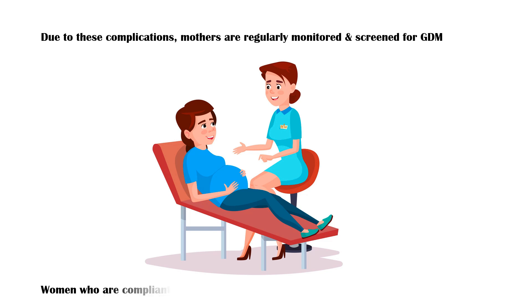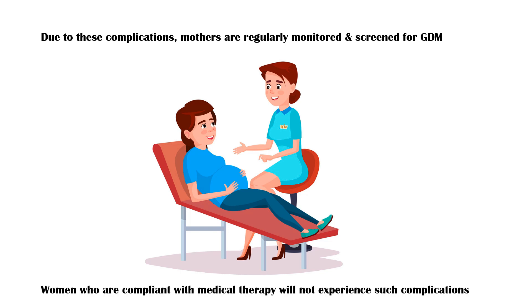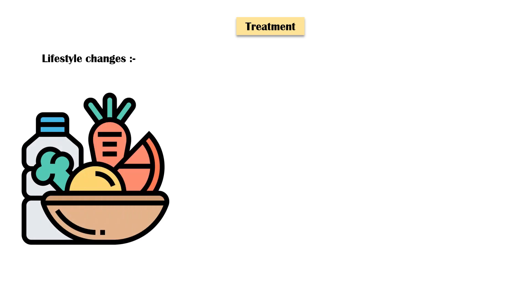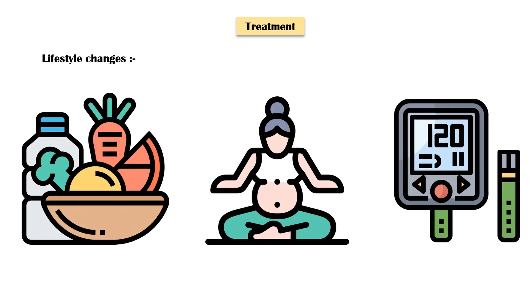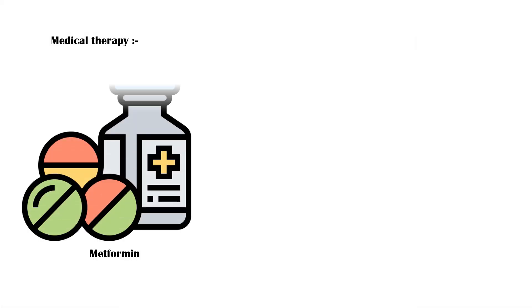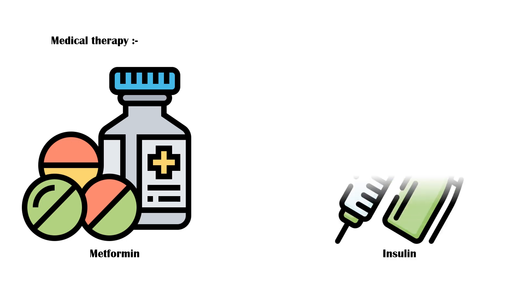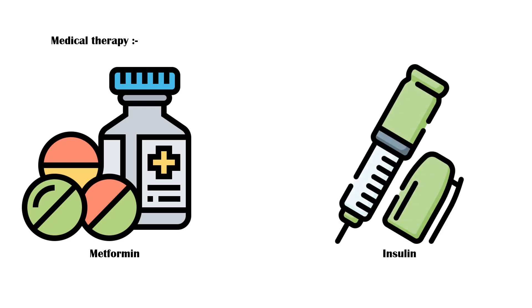Therefore, women who are compliant with medical therapy will not experience such complications. First-line treatment of gestational diabetes is lifestyle changes, including dietary modifications, exercise, and blood glucose monitoring. Medical therapy includes oral hypoglycemic agents such as metformin and injectable agents such as insulin.